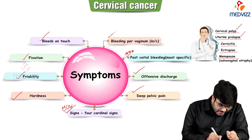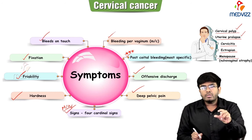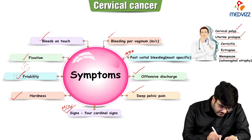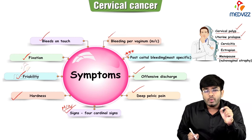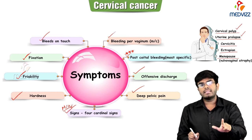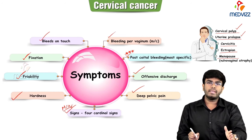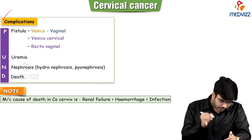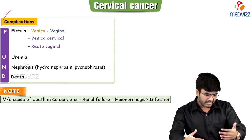When doing a vaginal examination, the cervix easily bleeds on touch because it is friable and delicate. It is also fixated and shows hardness. Remember these four cardinal signs: fixation, hardness, friability, and bleeds on touch. Most specific: post-coital bleeding. Most common: irregular vaginal bleeding.